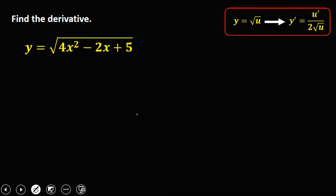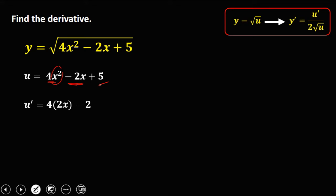Then for this given: y equals square root of 4x squared minus 2x plus 5. From the given, u is equal to 4x squared minus 2x plus 5. To get the derivative u prime: the derivative of 4x squared is 4 times 2x, the derivative of negative 2x is negative 2, and the derivative of positive 5 is 0. So u prime is equal to 8x minus 2.